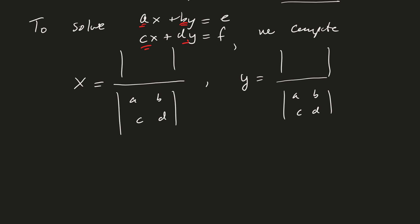Now for X, what you do is you take this column, and you put it in the first position, and then leave the other column alone. And for Y, you do the opposite. So you put AC there, and then you replace the second column by EF. And there you go. That's how you solve for X and Y using Kramer's rule.